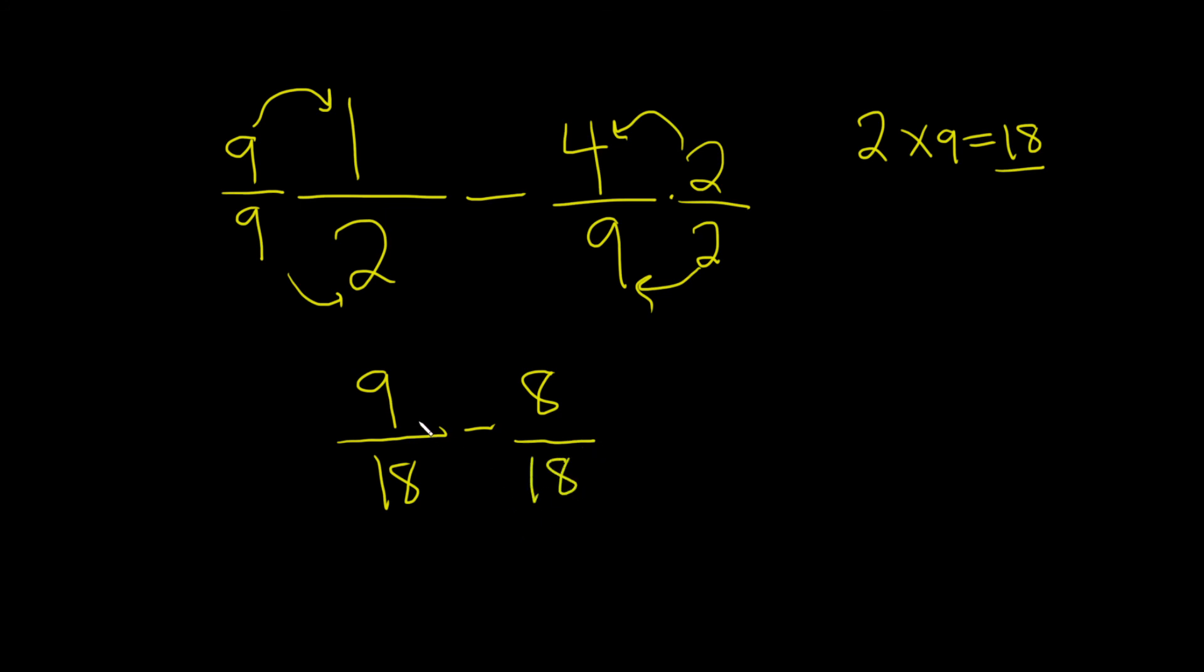Then you just subtract, nine over eighteen minus eight over eighteen is one over eighteen, and that would be the final answer.